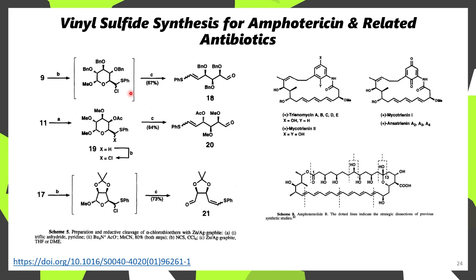Here's an interesting example where they took a thioether, chlorinated it with N-chlorosuccinimide. So instead of a bromide or an iodide, we have a chloride, and then upon cleavage with zinc, silver, and graphite, they were able to ring open this and form the corresponding vinyl sulfide as a mixture of diastereomers. The way they put the thiophenyl group on is through treatment with tributylphosphine and diphenyl disulfide through a Mitsunobu-like reaction.